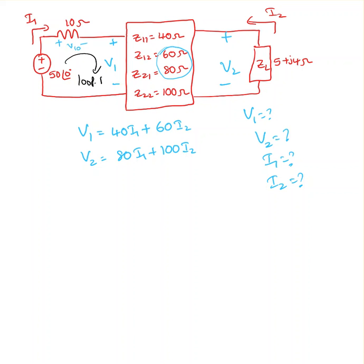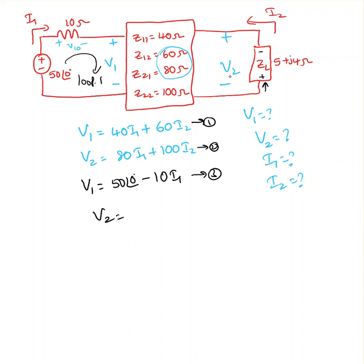That's loop one — apply KVL. It's going to be: V1 = 50∠0° − 10·i1. That's the first equation. For V2, remember current is entering here and leaving there, so the sign is negative: V2 = −(5 + j4)·i2. This is my fourth equation.